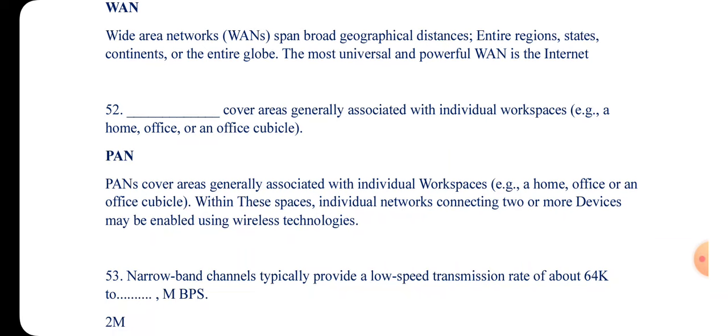Question 52: This covers areas generally associated with individual workspace, such as a home office or a small office complex. The answer is PAN — Personal Area Network. A personal area network covers areas generally associated with individual workspace, such as a person's home or office. Devices may be enabled using wireless technologies.